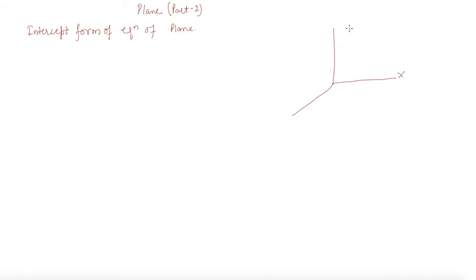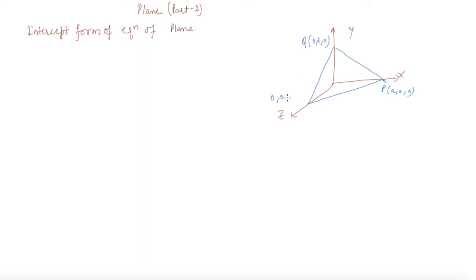So let us say these are the x, y, and z axes. There is a plane which is making intercepts: let us say this intercept is P at (a, 0, 0), y intercept is (0, b, 0), and this is (0, 0, c). The equation of the plane in intercept form is given by x/a + y/b + z/c = 1.